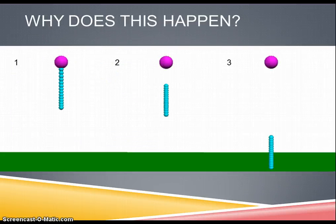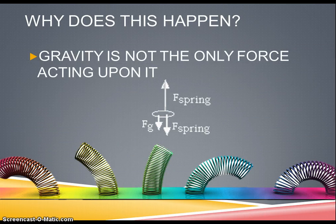Now, why does this happen? Why does the slinky appear to levitate for about 0.3 seconds after it is dropped? Gravity is not the only force acting upon it. There is also restorative force pulling downward on the top and upward on the bottom of the slinky, which causes the top of the slinky to fall faster than the bottom of the slinky.